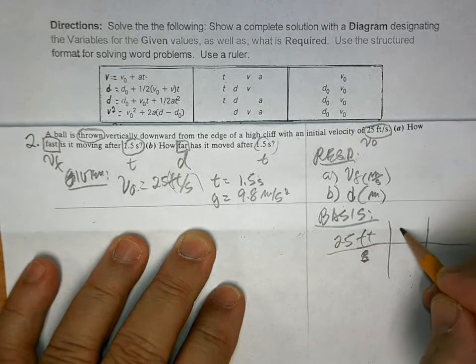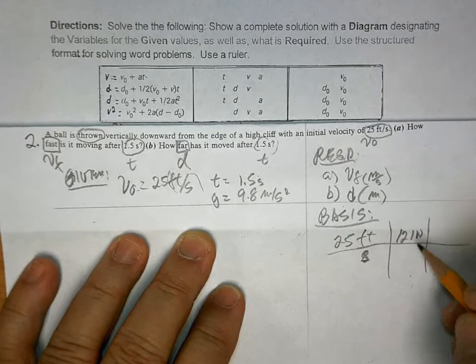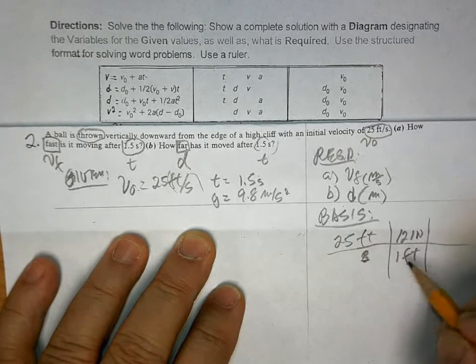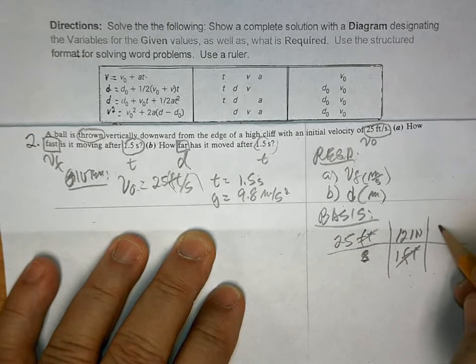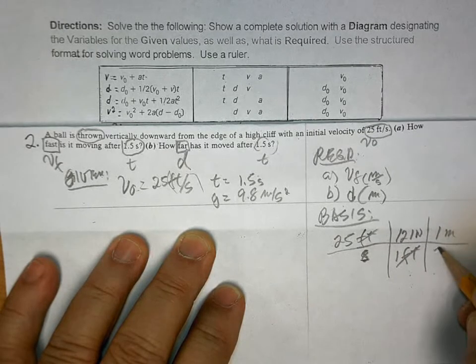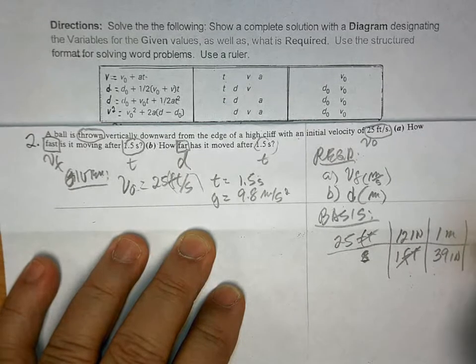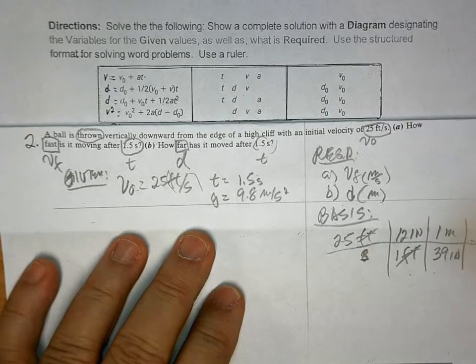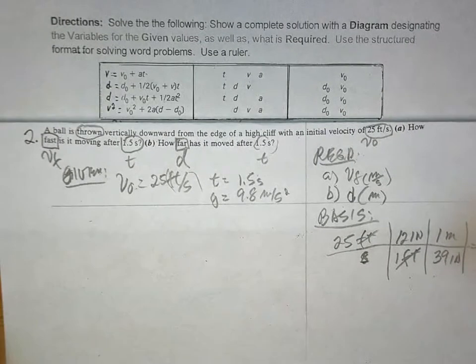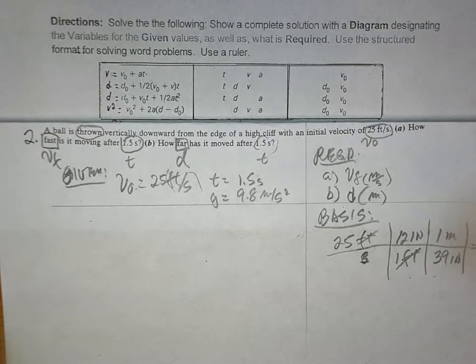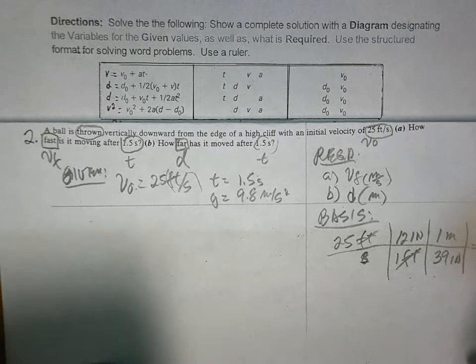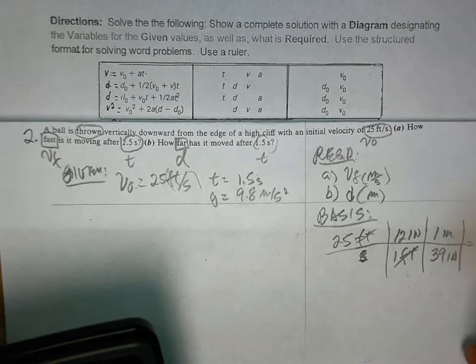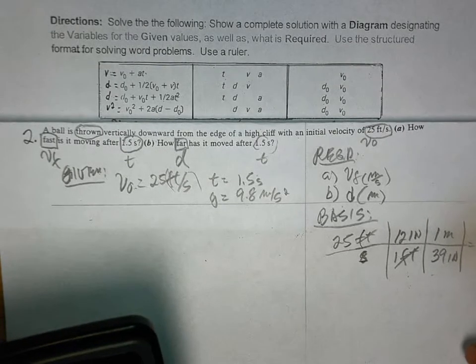12 inches is equal to 1 foot. Cancel. And then, what? 1 meter is equal to 39 inches. And a lot of people said, no, it's the other way around. But no. This is the right way. 25 times 12 divided by 39. So, I got 7.7 meters per second.